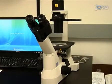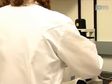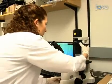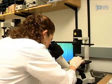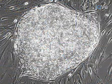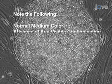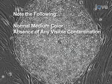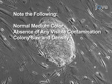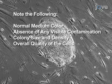The overall culture quality is assessed by observing the colonies at low power, using 2x or 5x magnification. As you look at the cells under the microscope, note the following: normal medium color, absence of any visible contamination, colony size and density, and the overall quality of the cells.